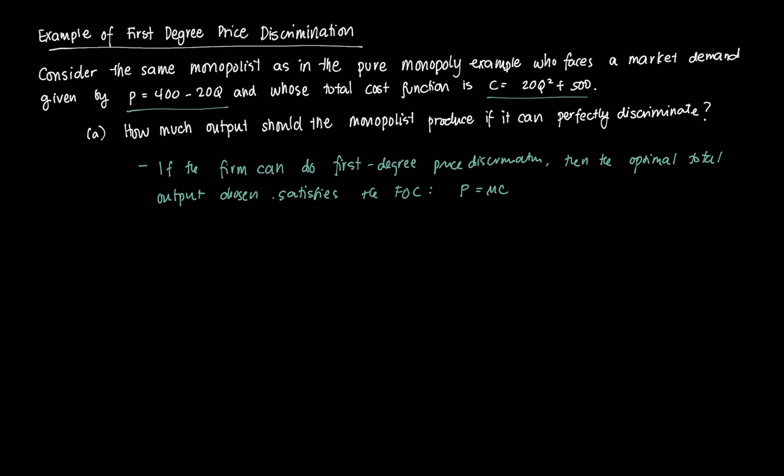It can charge the last consumer exactly equal to the marginal cost rather than not being able to reap revenue from that consumer if it had done an optimization procedure wherein MR was equal to MC. But since it knows that consumer's maximum willingness to pay, it could adjust that and perform this price discrimination.